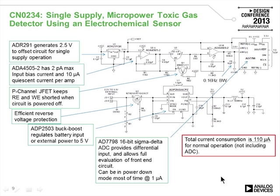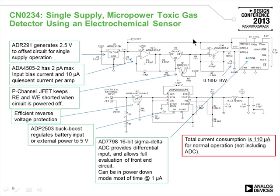The circuit operates on a single 5-volt supply. We use the ADR291 reference to generate a 2.5-volt pseudo-ground for the circuit. We also have a buck-boost regulator which allows an input voltage anywhere from 2.5 to 5.5 volts to generate the 5 volts that drives the circuit. This simple regulator is highly efficient and allows a wide variation in battery voltage for portable applications. Total current consumption of the entire circuit is about 110 microamps.